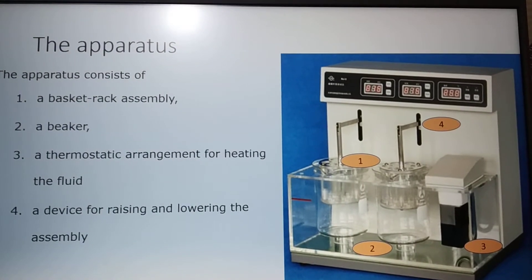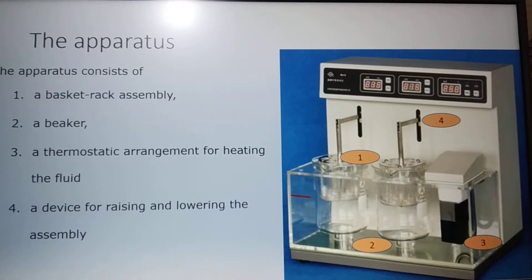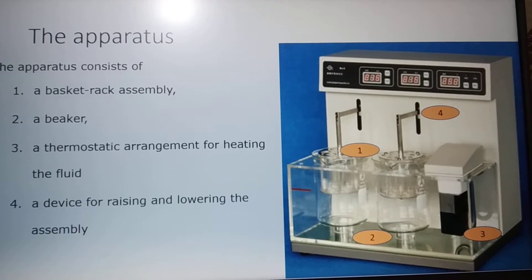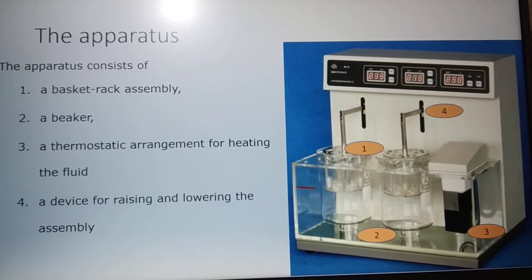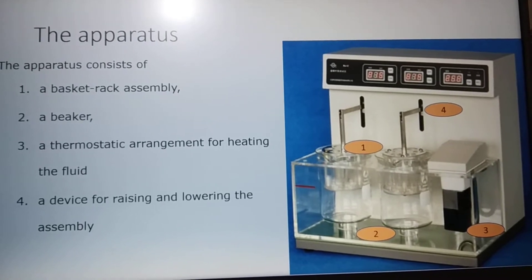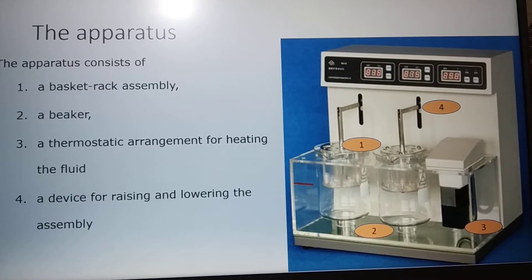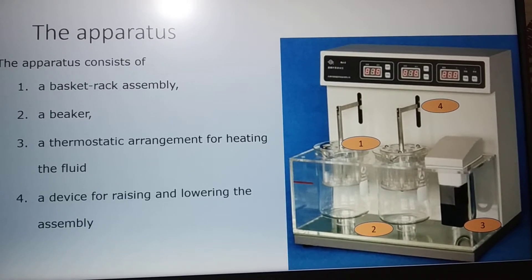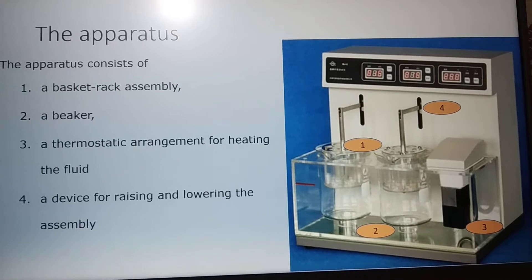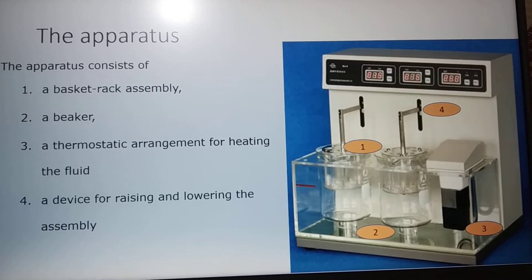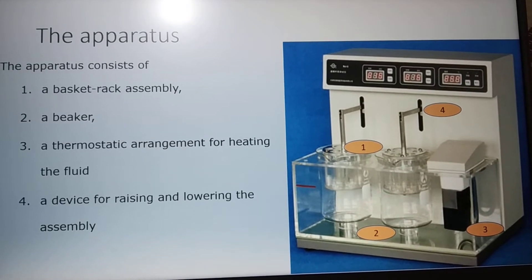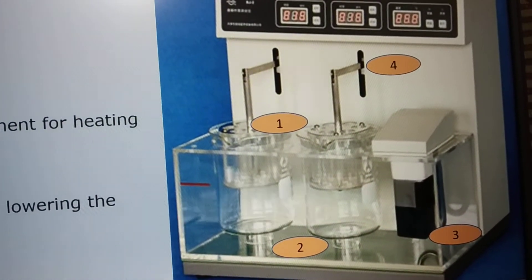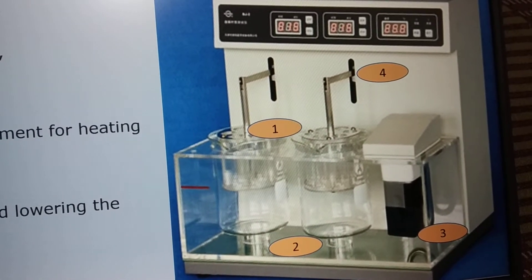Now we are going to see the disintegration apparatus. The disintegration apparatus consists of four components. The first one is a basket rack assembly, denoted by one in the figure. The second one is a beaker, denoted by two. Then there is a thermostatic arrangement for heating of the fluid, and the fourth one is a device for raising and lowering the assembly, denoted by four in the picture. In an automatic instrument, you can also see a display.